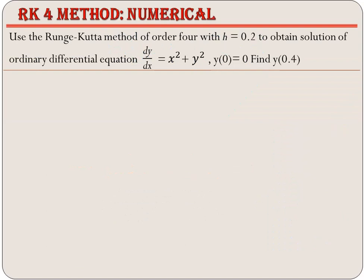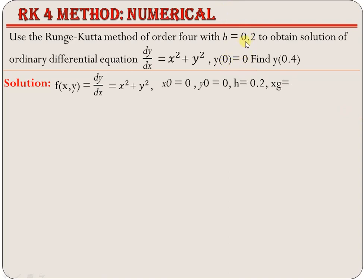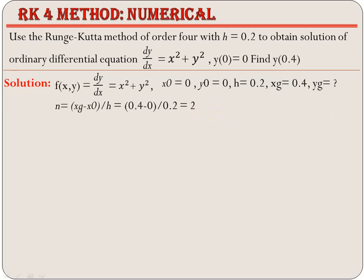Let's consider the differential equation x² plus y² and we have to find the value of y at a given value of x. We are writing the given data: the function is denoted as f, the initial values of x and y are both 0. The step size is 0.2 denoted as h. The value of x at which we find y is denoted as xg and given as 0.4, and the value of y to find is denoted as yg. The number of steps is calculated as (xg minus x0) divided by h, which gives two iterations for this numerical.